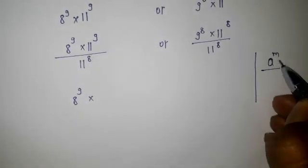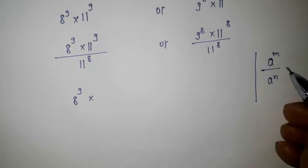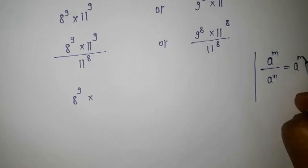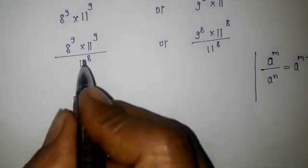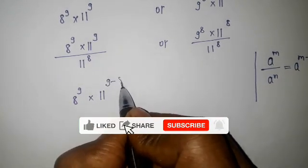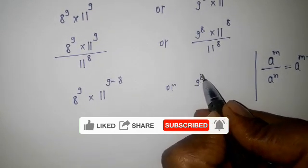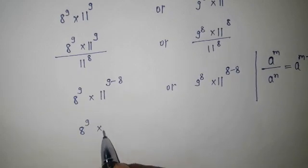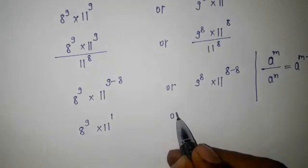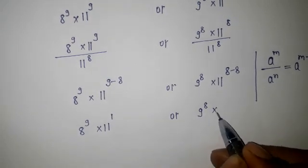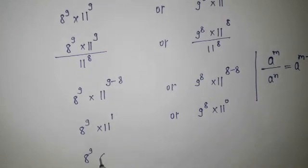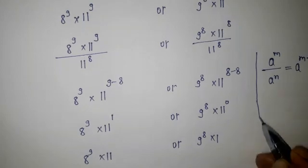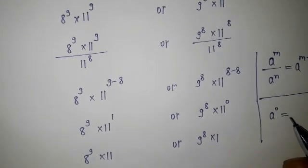Using the formula a^m ÷ a^n = a^(m−n): on the left we get 11^(9−8) = 11^1, and on the right 11^(8−8) = 11^0 = 1. So the result is: left side is 8^9 × 11, and right side is 9^8 × 1. Since anything to the power 0 equals 1, the right side simplifies to just 9^8.